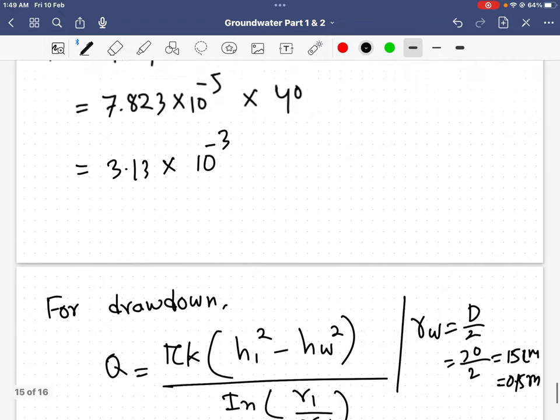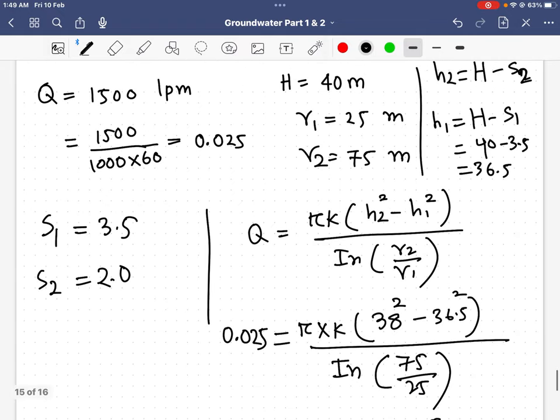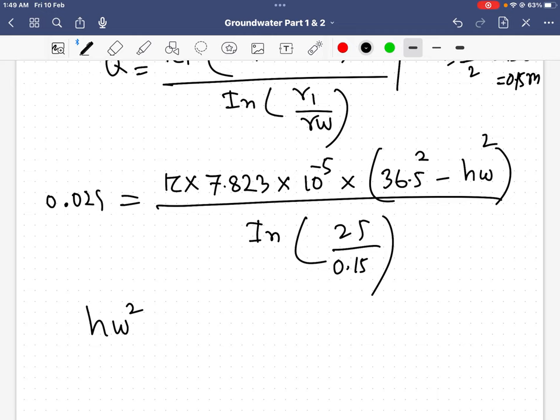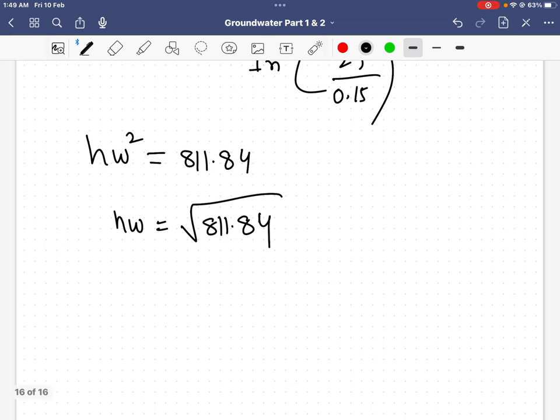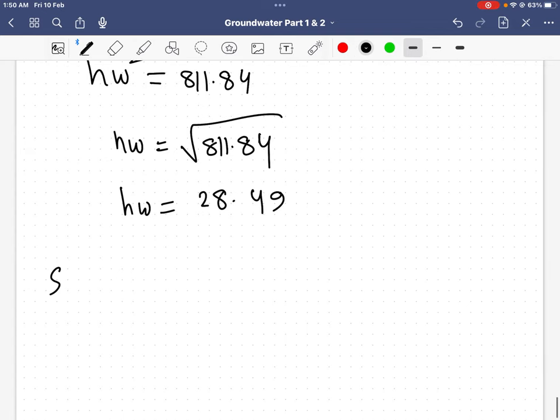I will get 811.84. hw equals the square root of 811.84. I will do the square root and get 28.49. This is not my sw yet.